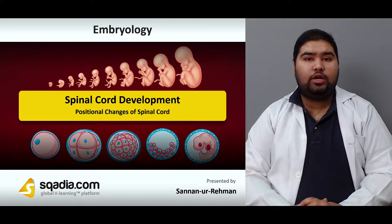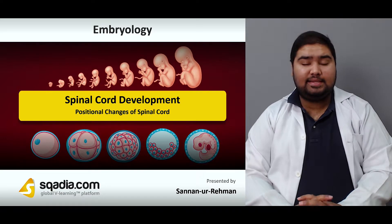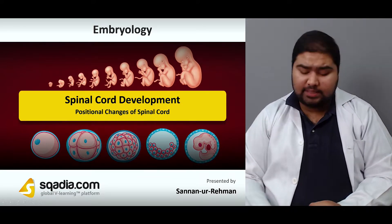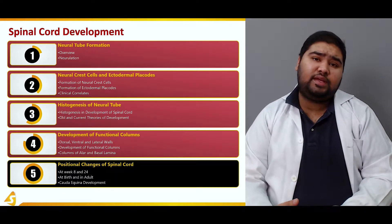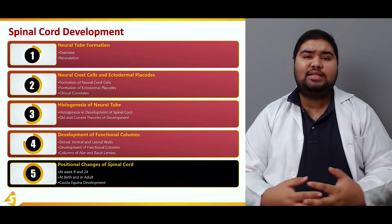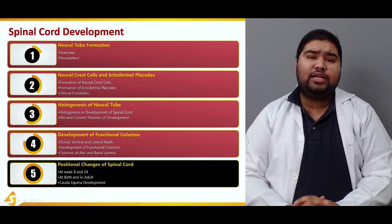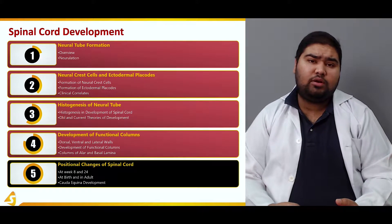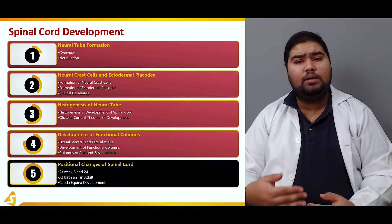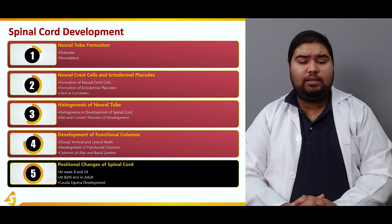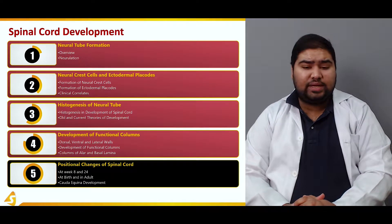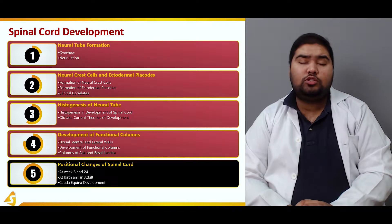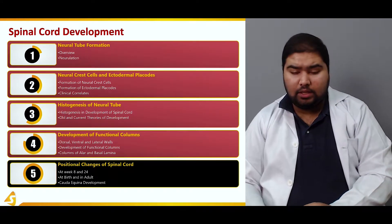Hello everyone, welcome back. We're talking about spinal cord development, and this is the last section of this presentation in which we'll talk about the positional changes of the spinal cord. The topic is relevant because the position of the spinal cord varies with the development of the fetus, the child, and the adult. We'll see the positional changes at weeks 8 and 24, then at birth and in adults, and finally the development of the cauda equina.